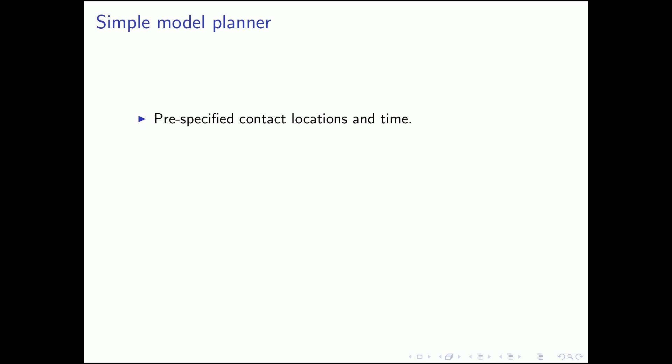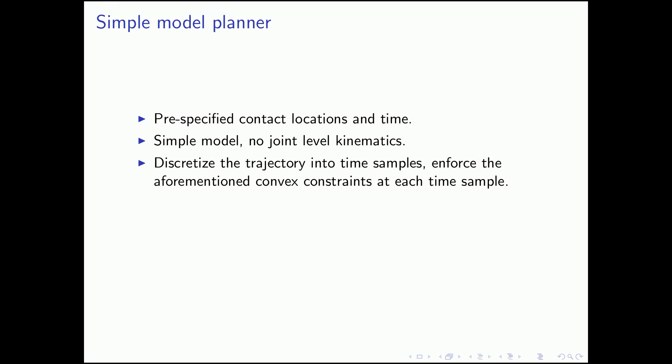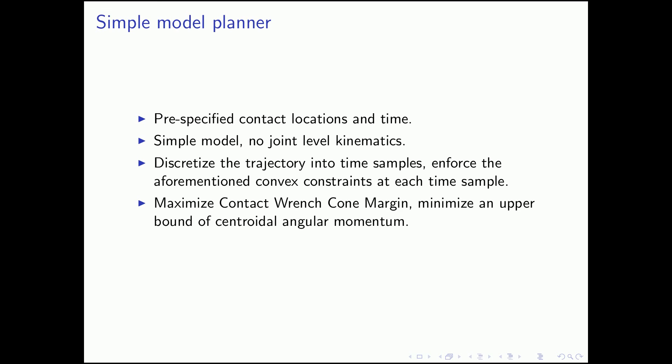To quickly summarize our approach: we take pre-specified contact locations and times and use a simple center of mass model of the robot without joint-level kinematics. We discretize the trajectory into time samples and enforce the convex constraints at each time sample. We maximize the contact wrench cone margin and minimize an upper bound of the centroidal angular momentum. This results in a convex optimization program.